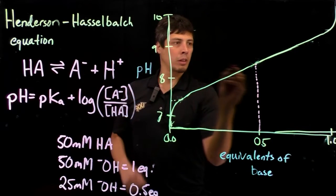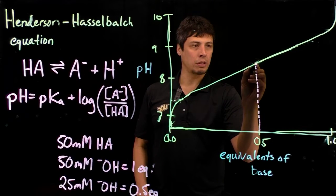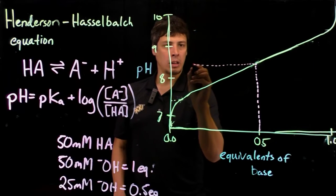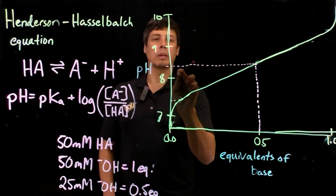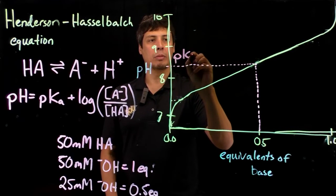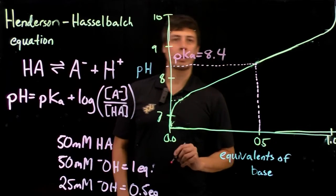At the half equivalence point, if we draw a line from 0.5 equivalence up to our plot, and then project that line onto the y-axis, which is pH, we can estimate that our pKa for this is about 8.4.